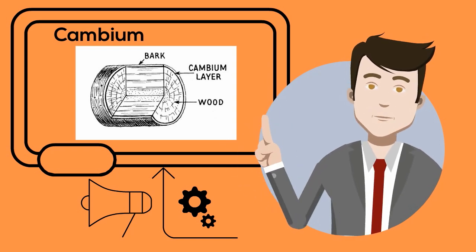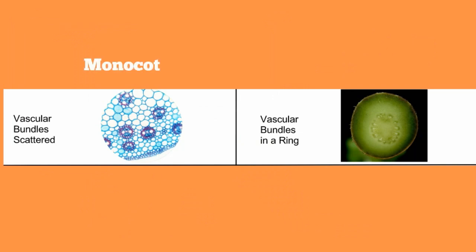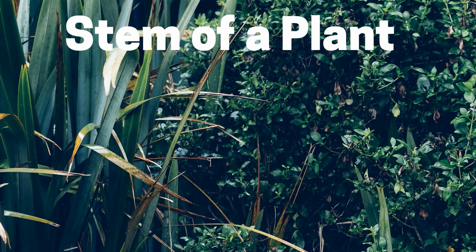If you look at the xylem and phloem of a dicot you will see that they are arranged in a ring. With a monocot they are scattered throughout.